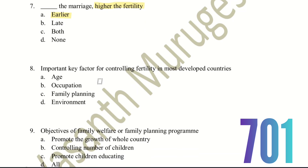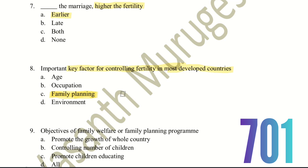Eighth question: what is the important key factor for controlling fertility in most developed countries? The choices are age, occupation, family planning, or environment. In developed countries, fertility is controlled through family planning — that is the key factor.